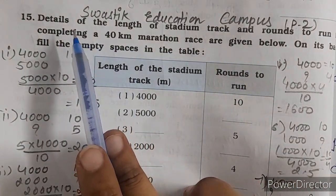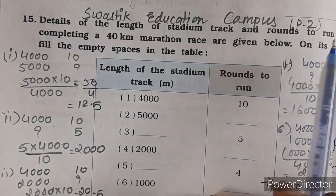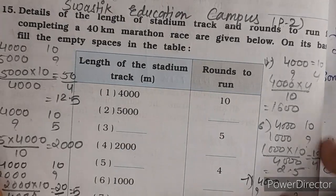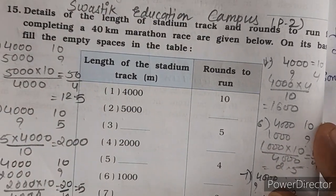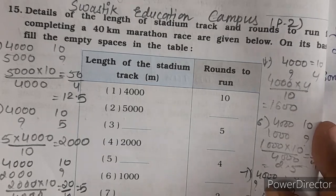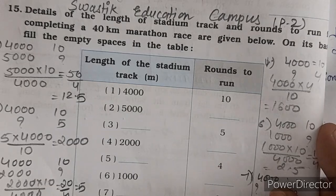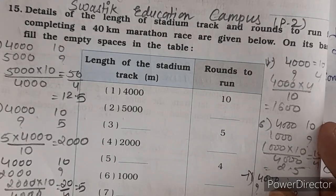Question number 15 mein kya bola gaya hai? Details of the length of the stadium track and rounds to run to completing a 40 km marathon are given below. On its basis, fill the empty spaces in the given table. Yahan pe 40 km mein kitne rounds us ground ke hote hain, us ke hisaab se aapko jo bhi blanks di gayi hain, woh complete karni hai.